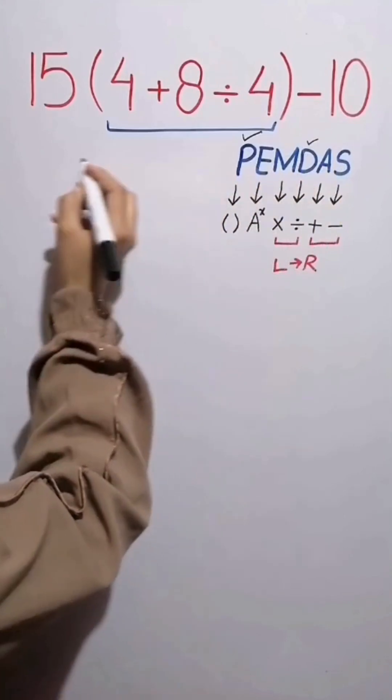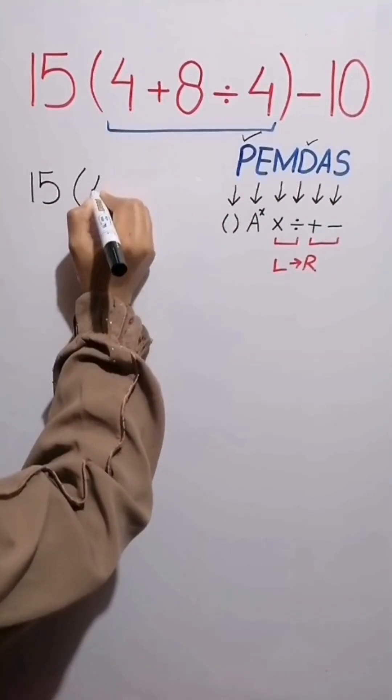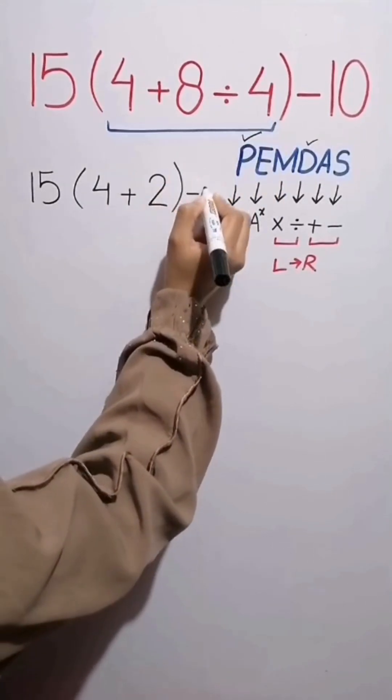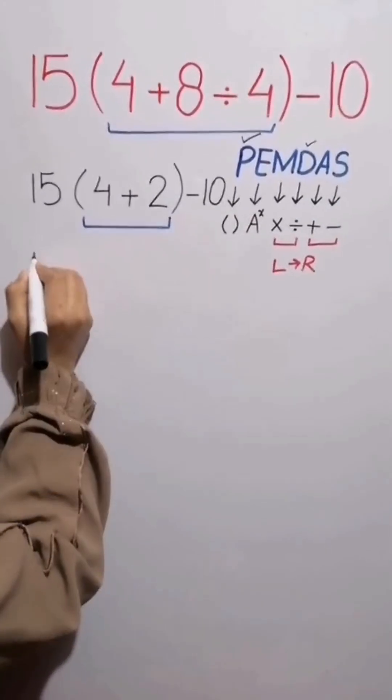We simplify this expression to 15 times (4 plus 2) minus 10, since 8 divided by 4 equals 2. Again we simplify the parentheses.